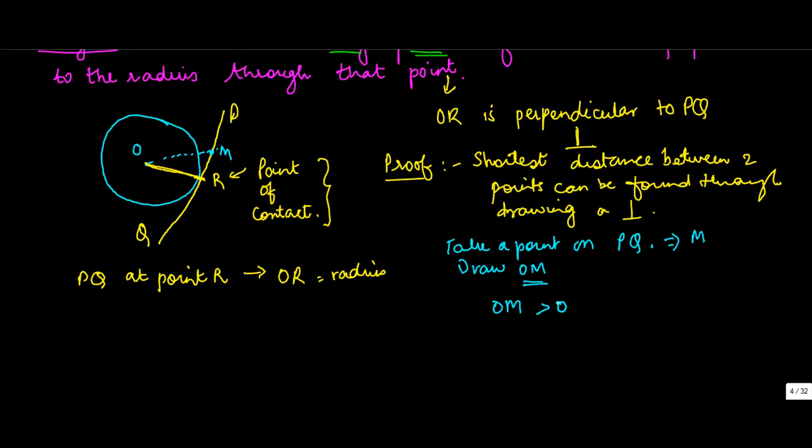If you see OM, this basically comprises of two parts: one is the distance up to the circumference of the circle and the balance is beyond the circle. Let's call this as x and this is r. So OM basically is r plus x, which is greater than r, obviously.